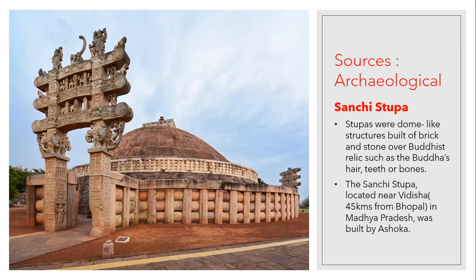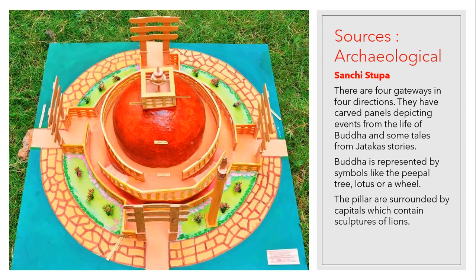The Sanchi Stupa is located near Vidisha, 45 kilometers from Bhopal in Madhya Pradesh, and was built by Ashoka. You can see a model of it — it has four gates, one in each direction. The carved panels depict events from the life of Gautam Buddha and tales from Jataka stories. Buddha is represented by symbols like the Bodhi tree, lotus, or a wheel.